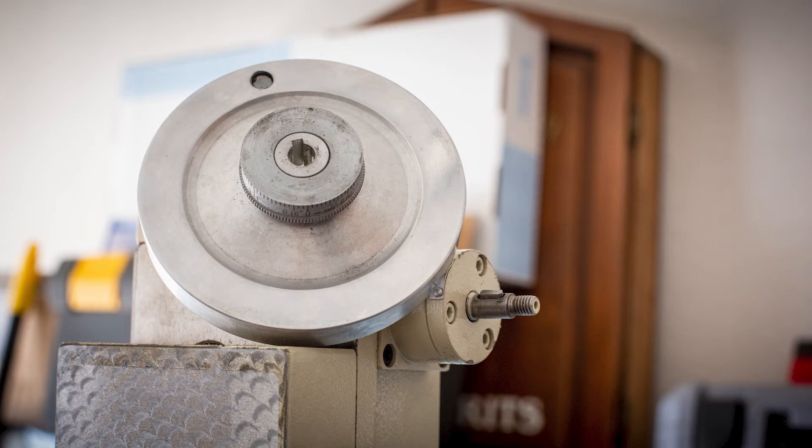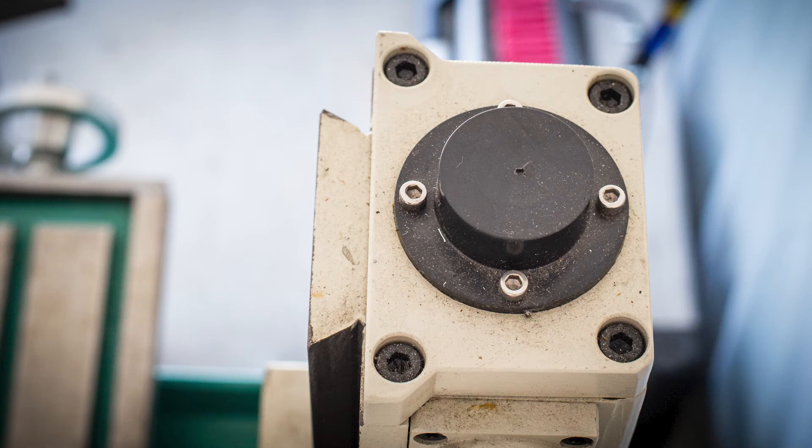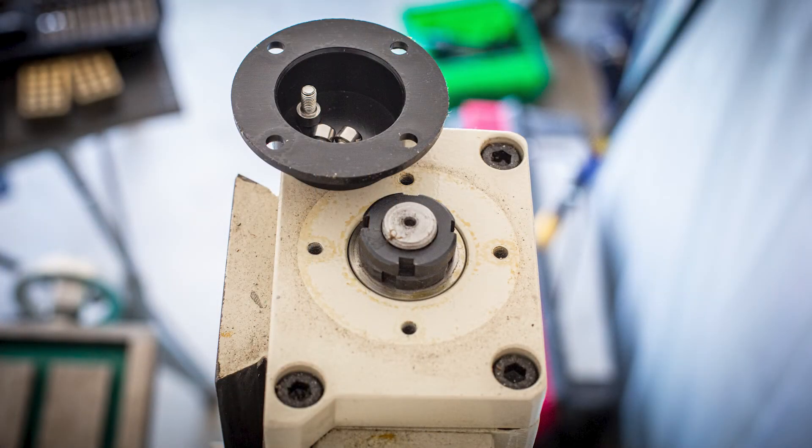At the top of the column is a bearing cover. I removed the bearing cover which revealed the lead screw lock nuts, and below that is the thrust bearing. I later discovered that removing this was not necessary for disassembly.